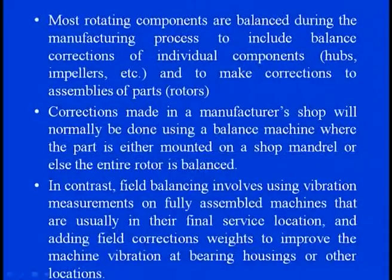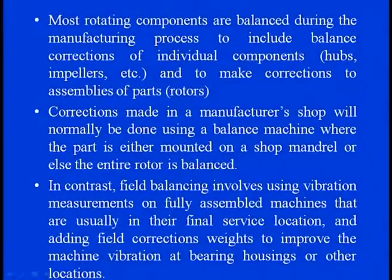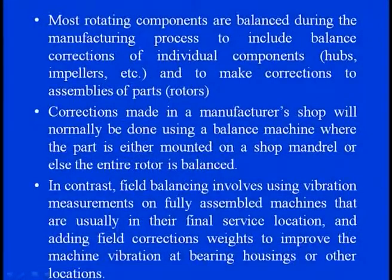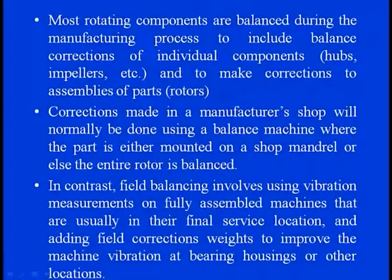Most rotating components are balanced during the manufacturing process only. At that time, hubs or impellers can have corrections applied during assembly. Corrections made in the manufacturing shop are normally done using the balancing machine — either the part is mounted on a mandrel or the entire rotor is balanced. In contrast, field balancing involves vibration measurements on a fully assembled machine at its final service location, and requires adding field correction weights to improve machine vibration at the bearing housing or other locations.